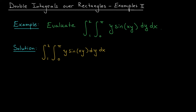You might be thinking: didn't we just do something like this in the last video? Yes, you can work with the inner integral, find an antiderivative of this expression with respect to y, substitute in the bounds, take their difference, then work on the outer integral. Let's give it a try. We need to find an antiderivative for y sine(xy) with respect to y. It looks like we have a product of two functions of y, so integration by parts could be useful here.